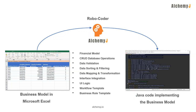In fact, Excel is well recognized to be the best tool for business and financial modeling. As AlchemyJ could implement API for all models in Excel, the efficiency of turning any business and financial models into open API like microservice is extremely high.